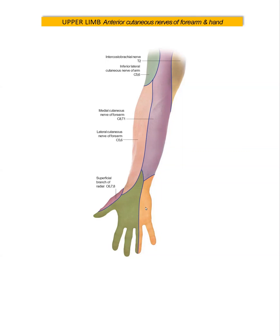Please remember that the median nerve has a branch called the anterior interosseous nerve (AIN). When the AIN is injured, it leads to the OK sign — this is the classic sign of anterior interosseous nerve injury.